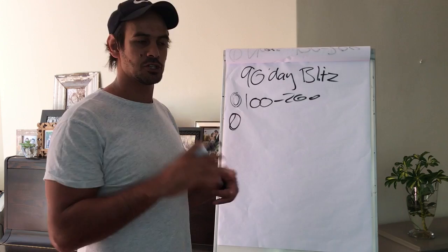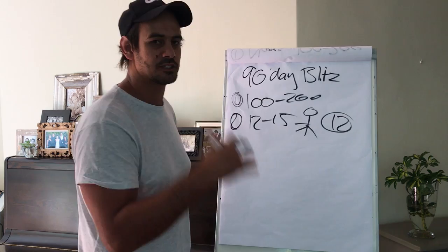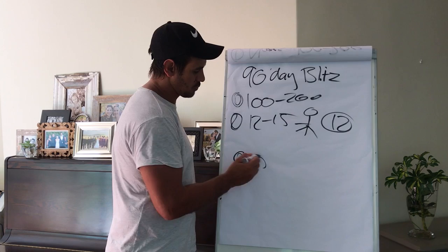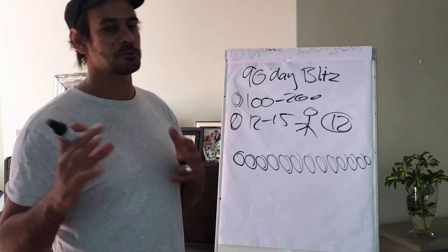Step number two is you want to sign up 12 to 15 people, 12 to 15 business builders, people that are serious, that want to do this business with you. This is very important. So what you will do is you will sign up people and you will go in with them all the time until you find those four to six people.